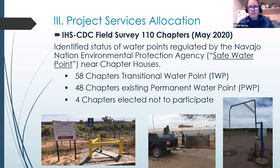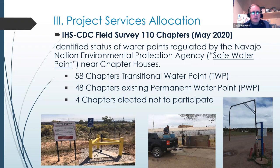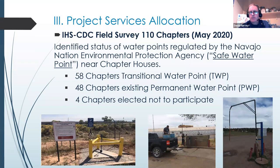All right, thanks Gabe. I'm going to go over just a little bit about how the decisions are made about the resources that have been provided. This project was done with IHS CARES Act dollars and with collaboration — the lead agency was the Navajo Nation Division of Community Development. The project started with a survey by the IHS and the Center for Disease Control of the 110 chapters, where we identified the status of regulated water points being regulated by the Navajo EPA — what we call safe water points, because the Navajo EPA ensures sampling and measurements of harmful chemicals in the water.